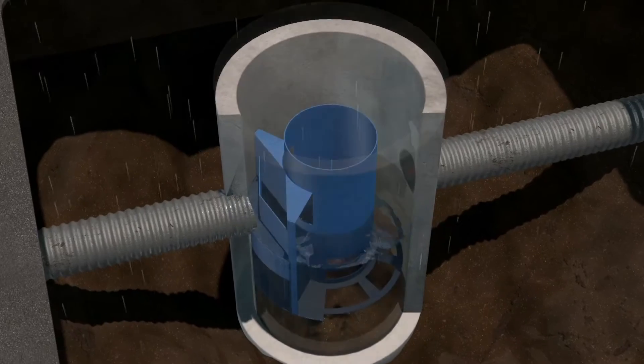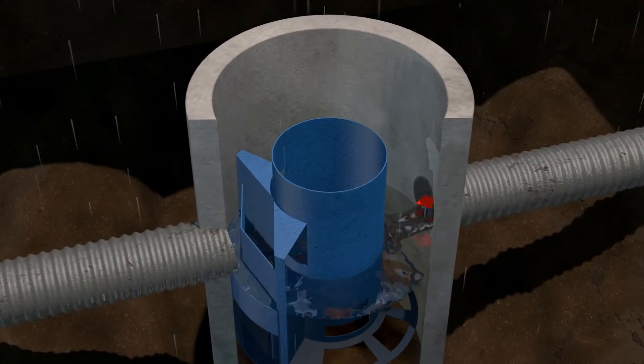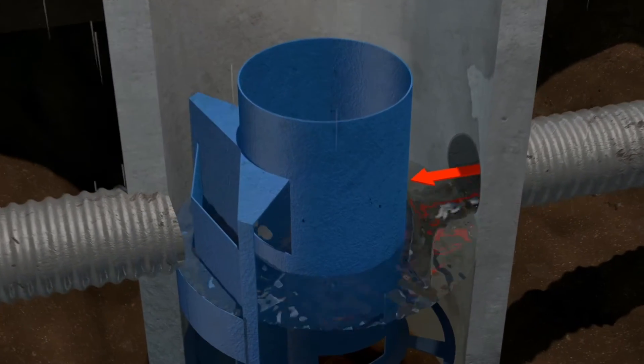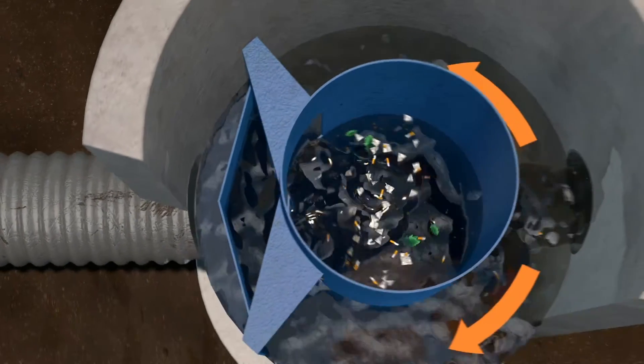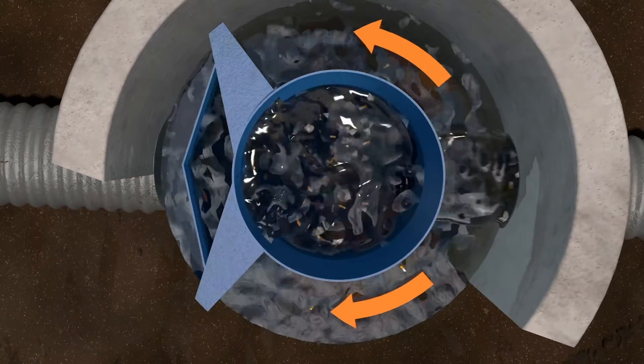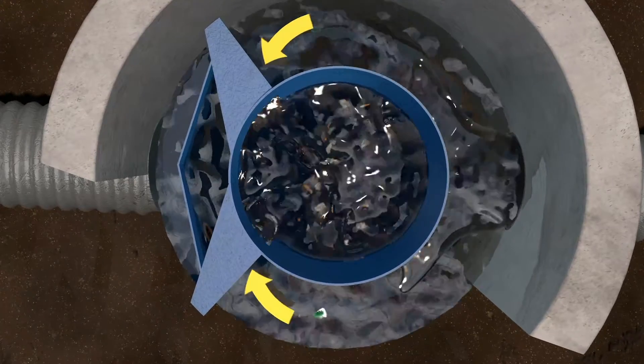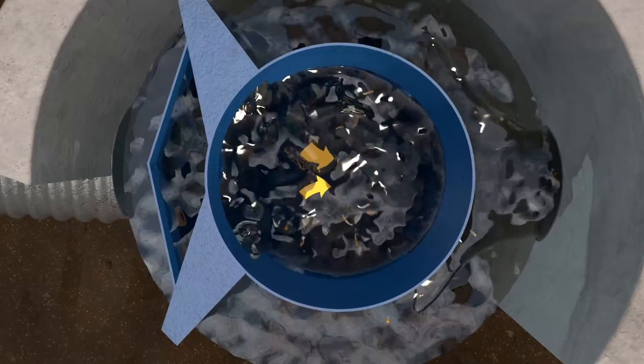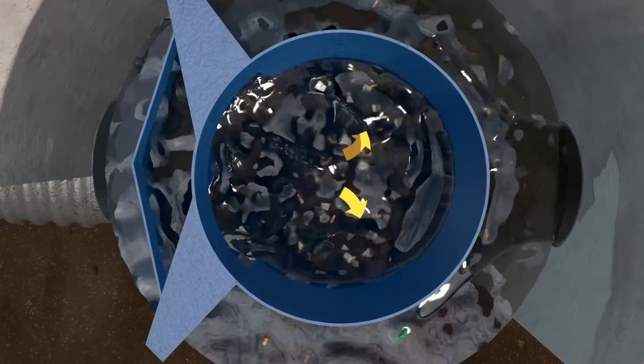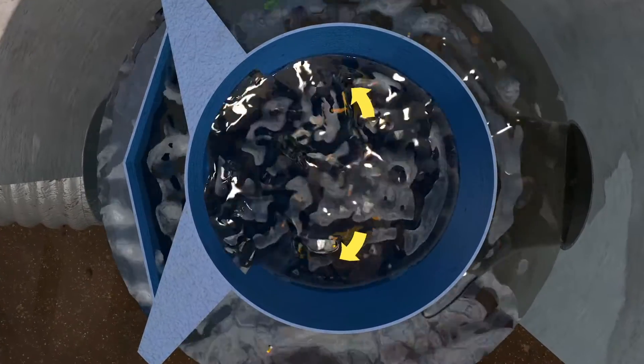The treatment process begins as stormwater enters the system through one or multiple inlets or an inlet grate. After water enters the unit, it is directed to two separate flumes. Water traveling through the opposing flumes enters the center chamber, where vortices rotate in opposite directions, facilitating enhanced particle settling.